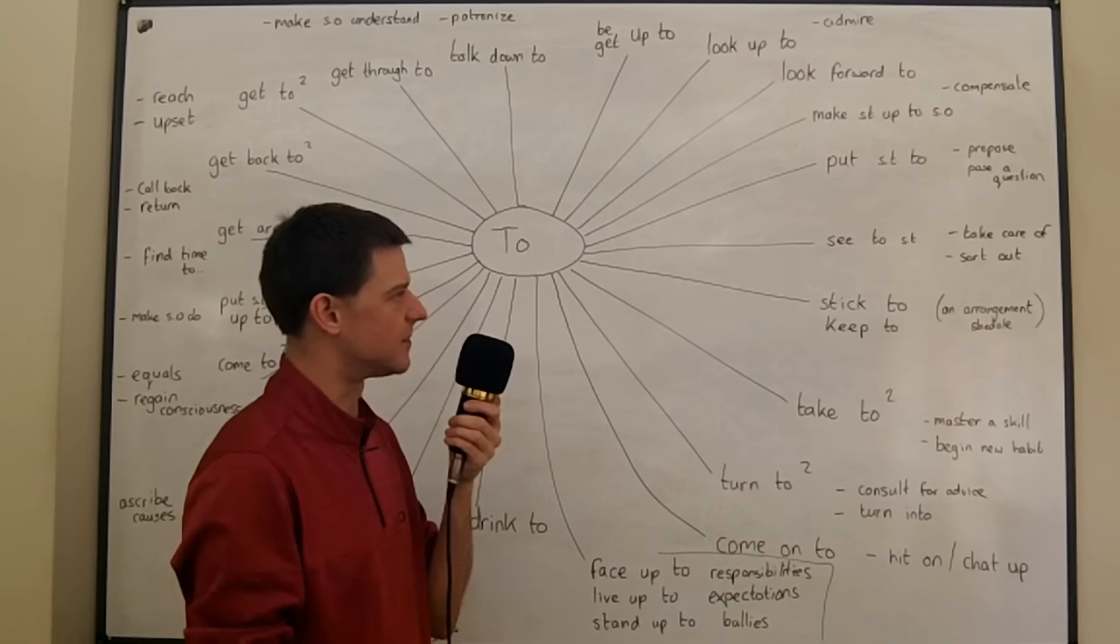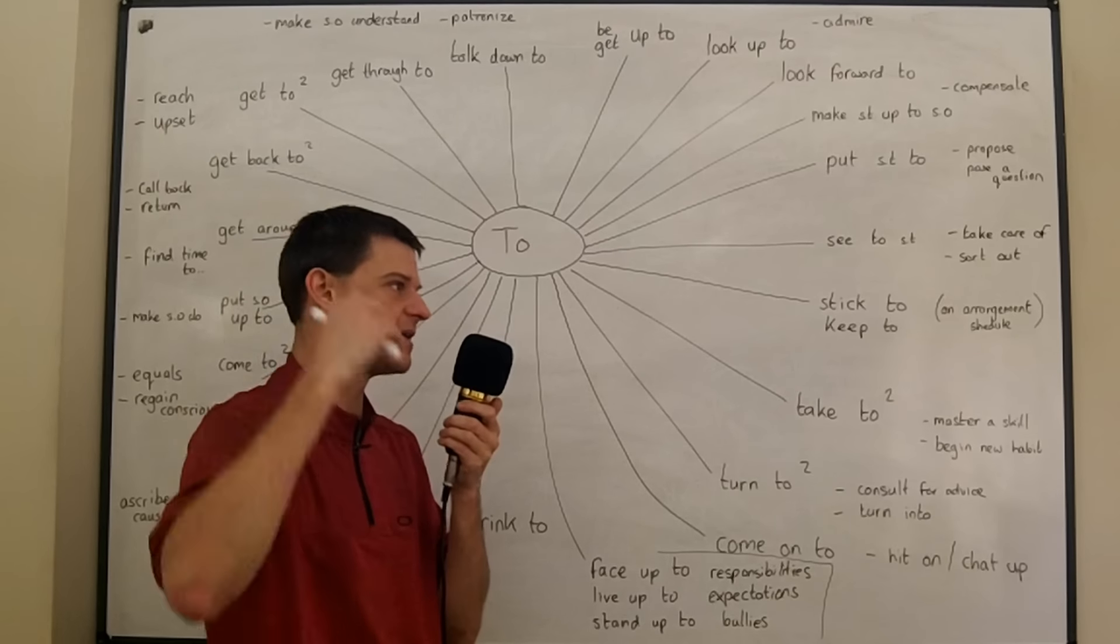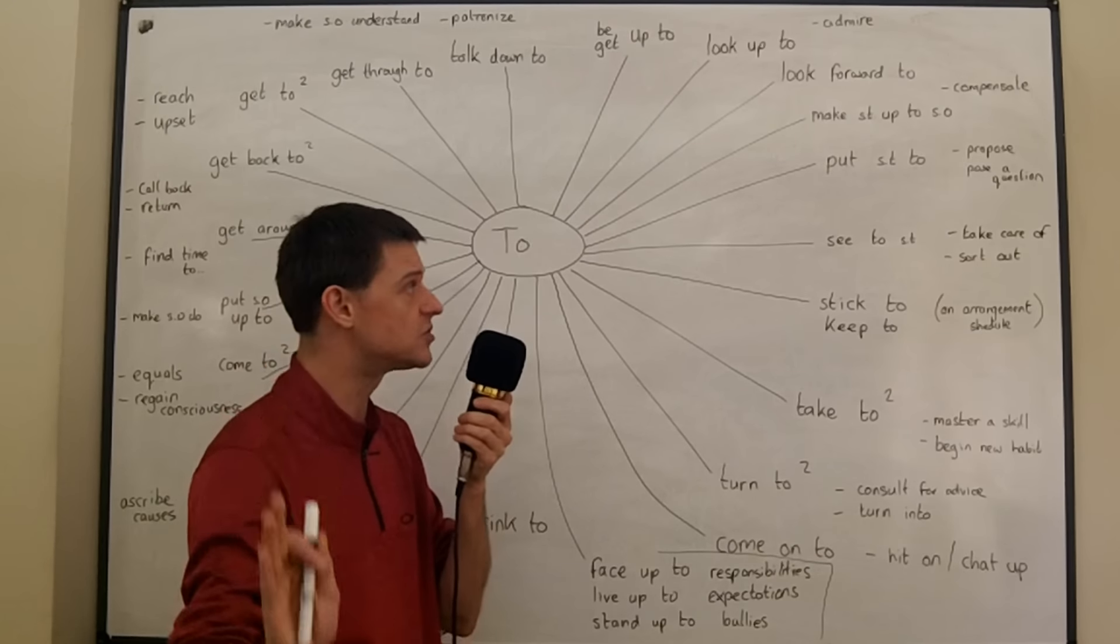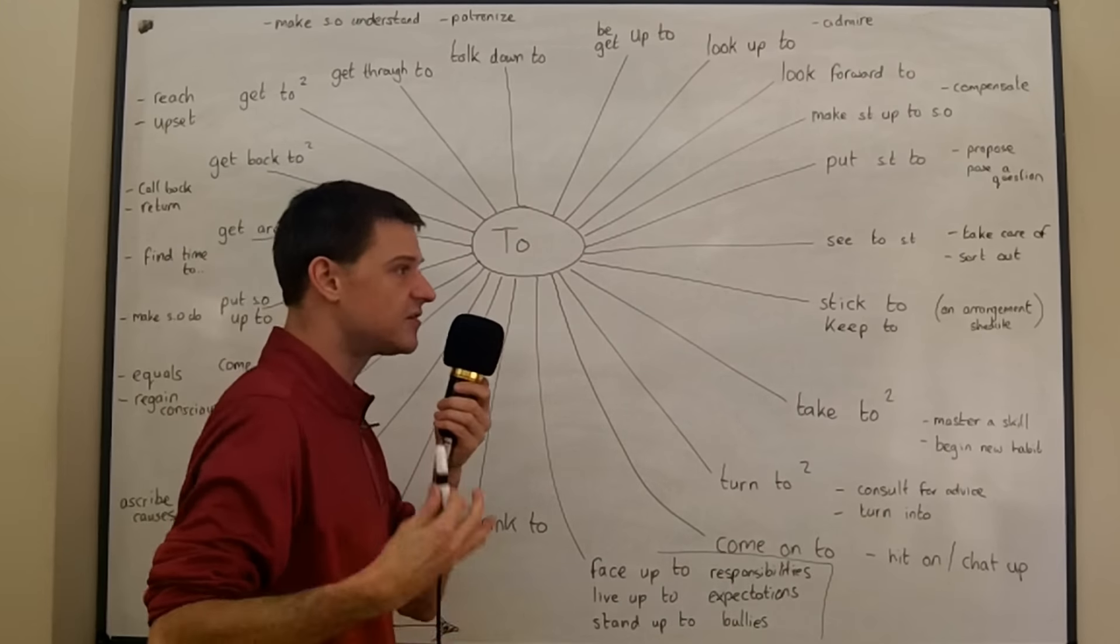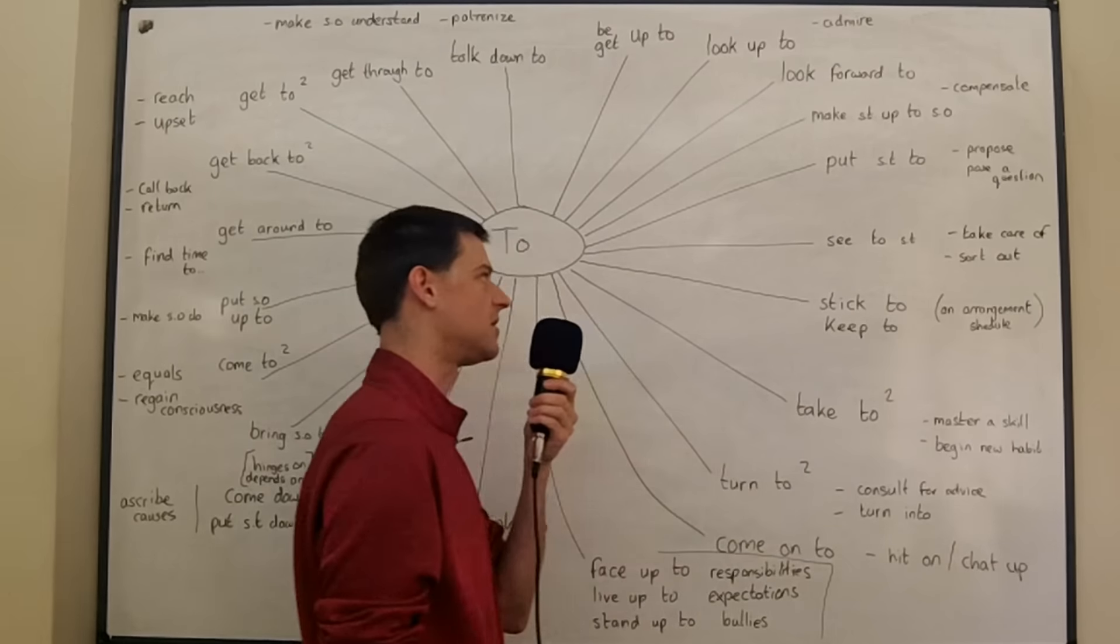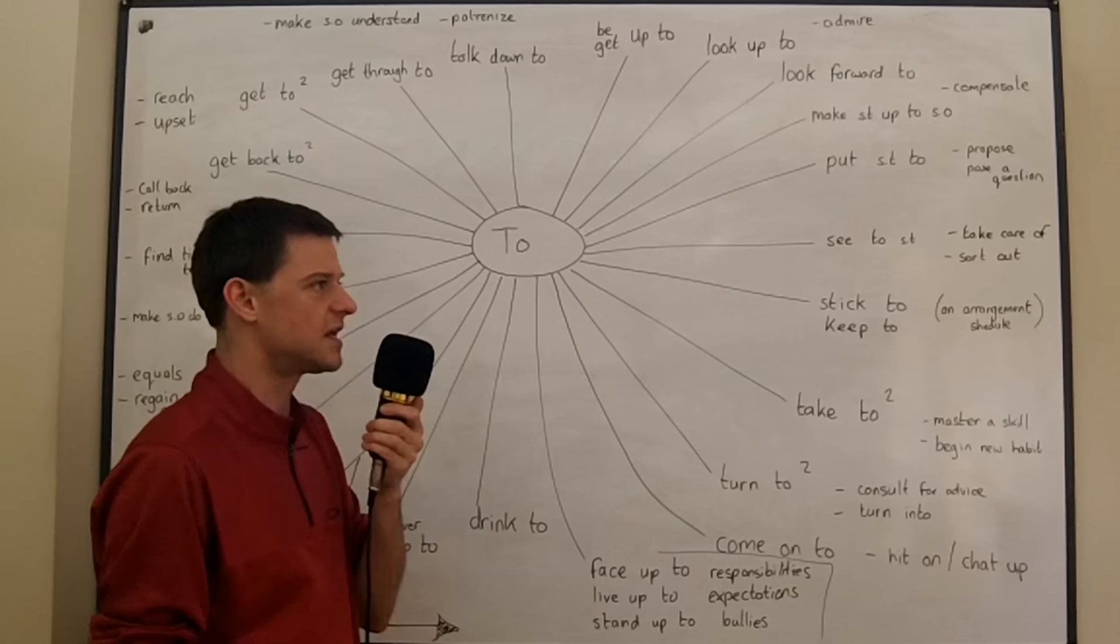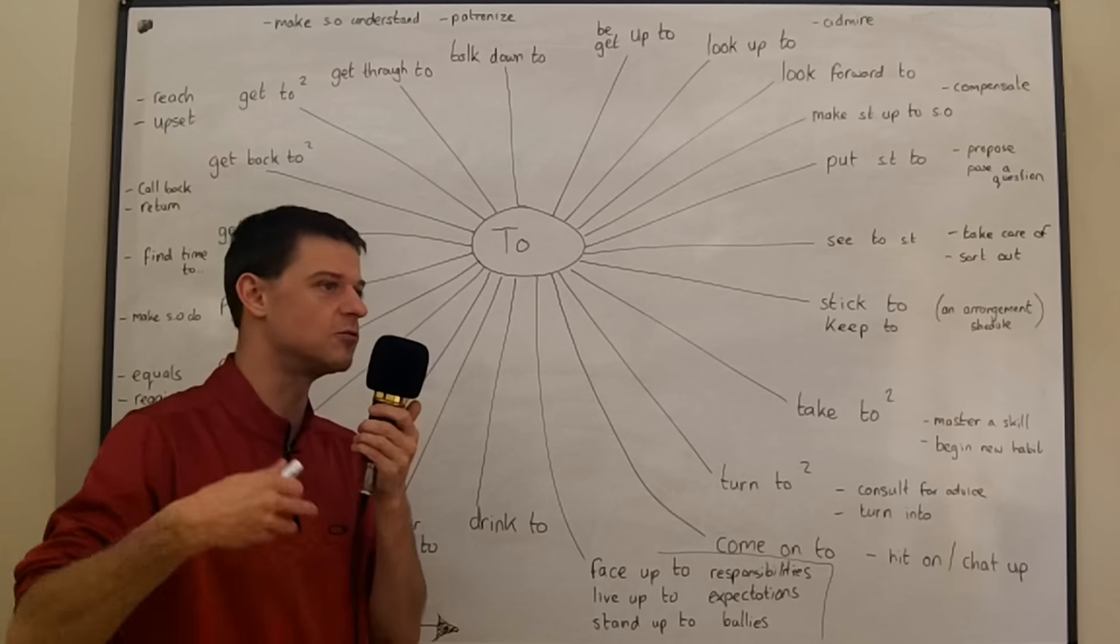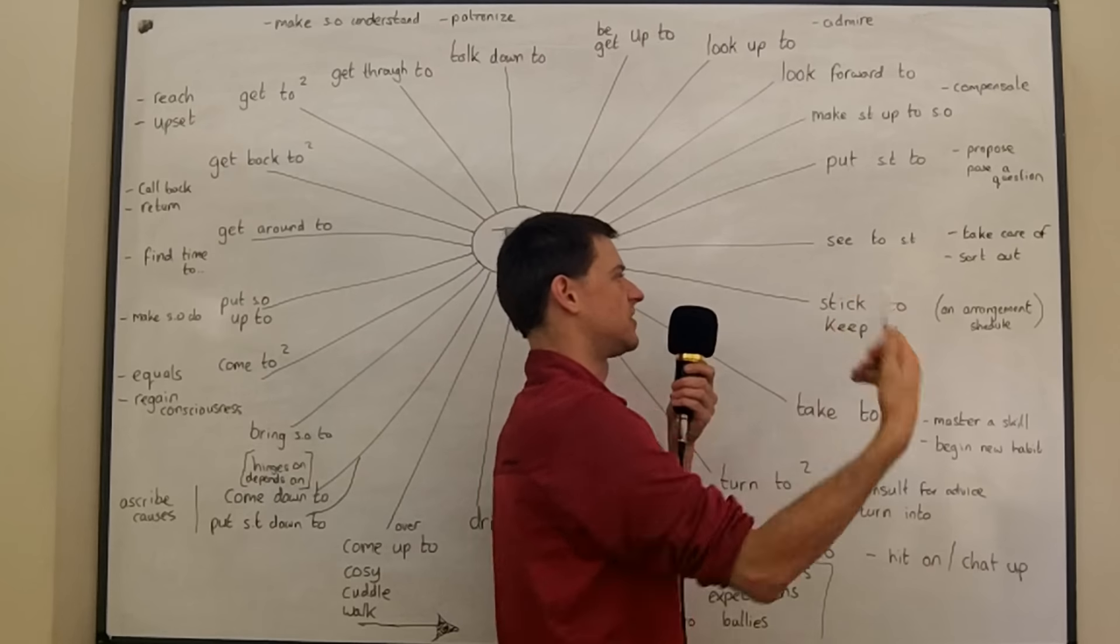If you see to something, if somebody says maybe one of your friends says I forgot to pick up that document from the post office and you say don't worry I'll see to it, it means don't worry I'll take care of it, I will do it, I will sort it out. So to see to something just means to get something done, to sort something out, to do something, very often used with errands and tasks. So saying something like after seeing to the shopping and the cooking and the cleaning I went out and saw some friends, that's fine. It means after sorting all out, all of the shopping, the cleaning, the cooking. So it just means get something done, get something organized, to see to something.